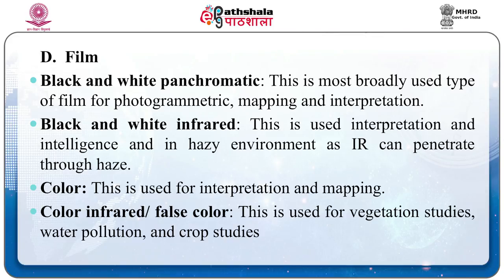Classification by Film: 1. Black and white panchromatic — most broadly used type of film for photogrammetric mapping and interpretation. 2. Black and white infrared — used in interpretation, intelligence, and in hazy environments as infrared can penetrate through haze. 3. Color — used for interpretation and mapping. 4. Color infrared or false color — used for vegetation studies, water pollution, and crop studies.